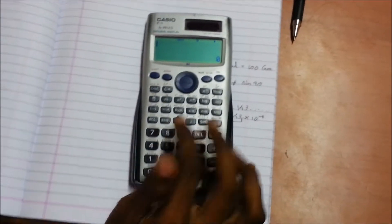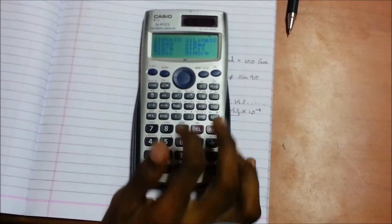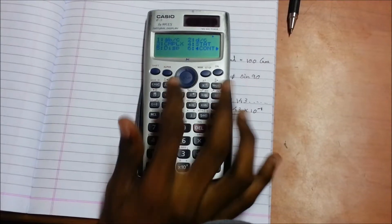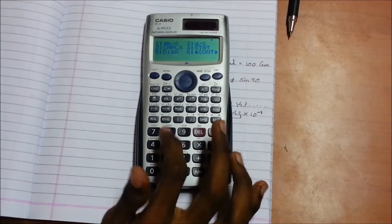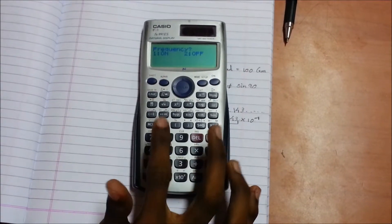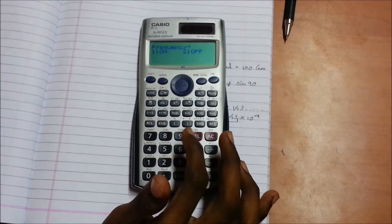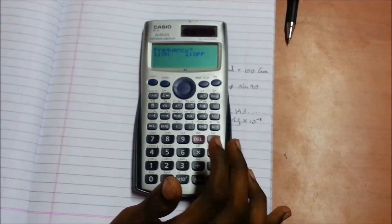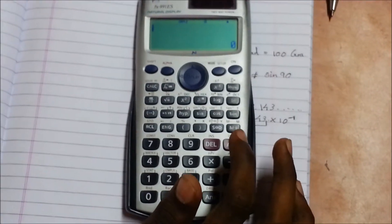Now we will start with the statistics function which is the fourth number. Press 4, and here it is frequency. This will be taught in the statistics mode afterward. After that, there is the next setup function.